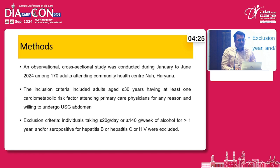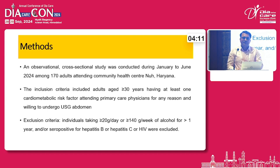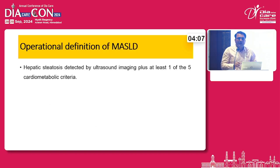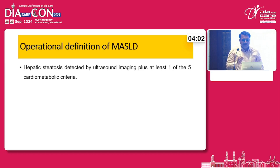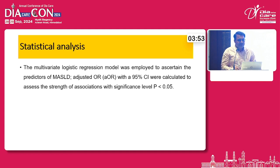Exclusion criteria were consuming 20 grams per day or 140 grams per week of alcohol — criteria applied to both male and female — for more than one year. Hepatitis B, hepatitis C, or HIV positive individuals were also excluded. The operational definition of MASLD was hepatic steatosis detected by ultrasound imaging plus at least one of the five cardiometabolic criteria.